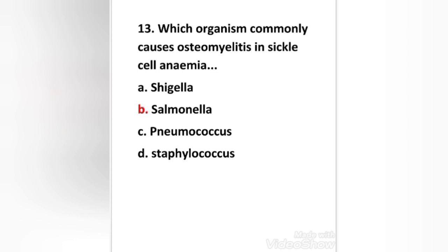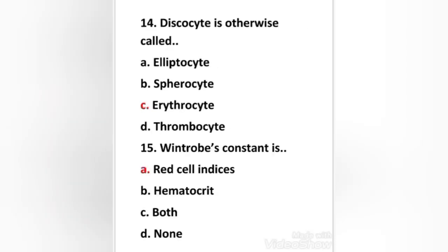Next question: which organism commonly causes osteomyelitis in sickle cell anemia — Shigella, Salmonella, Pneumococcus, or Staphylococcus? The right answer is option B: Salmonella.